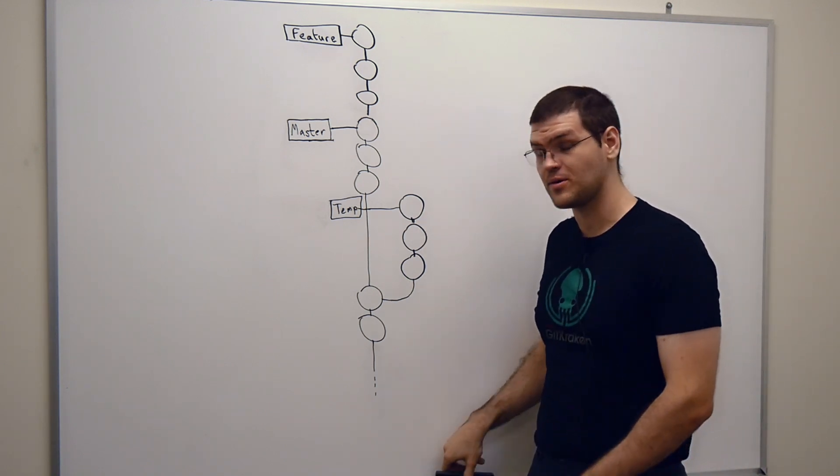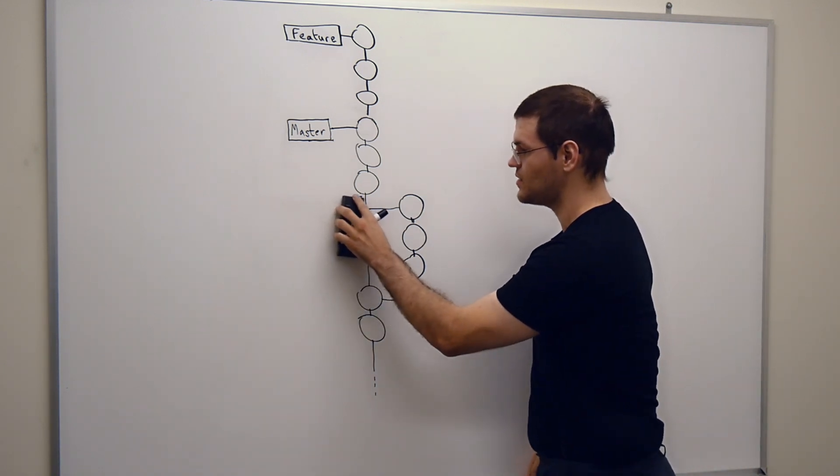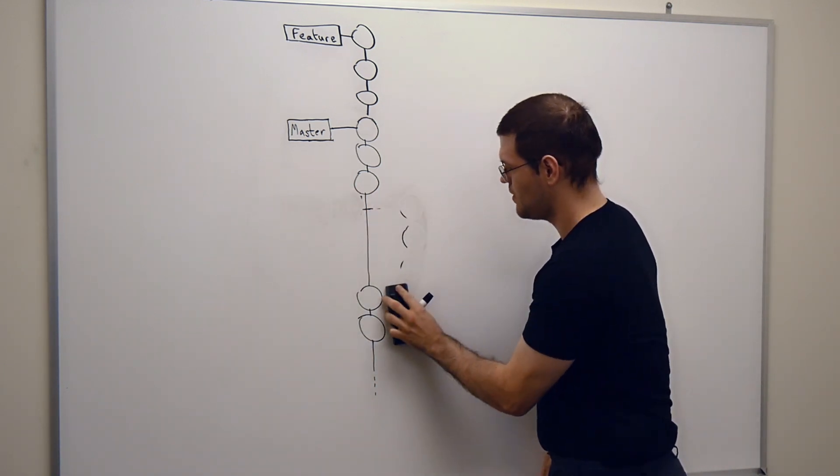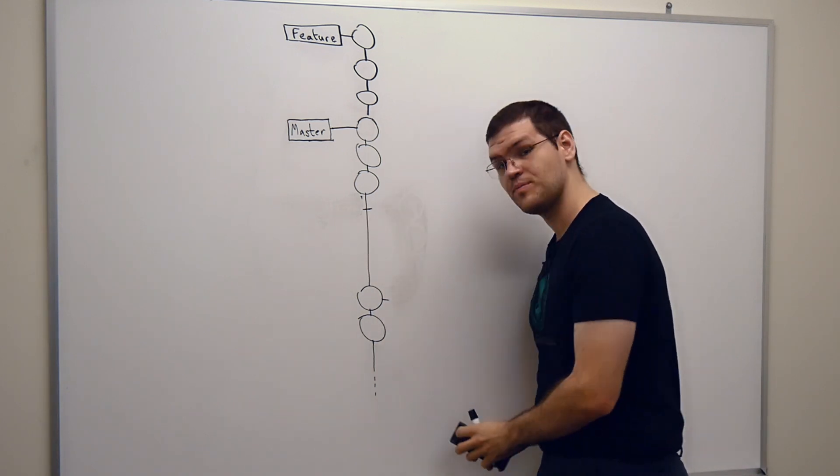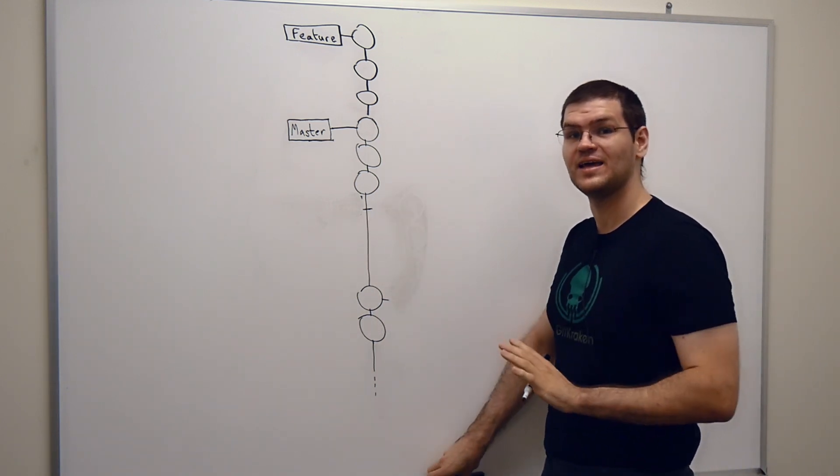Make sure to clean up your temporary branches when you're done. So I'll just delete this branch. And now the repository looks exactly how I wanted it.